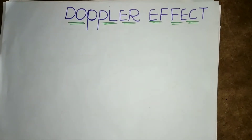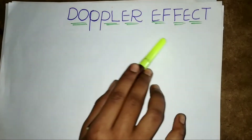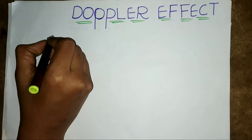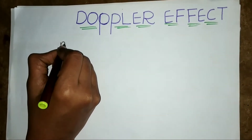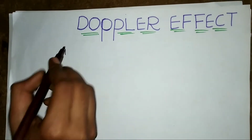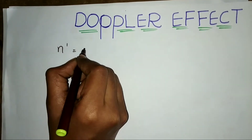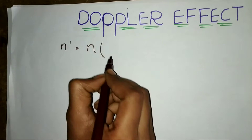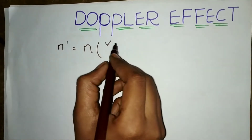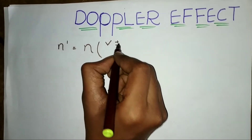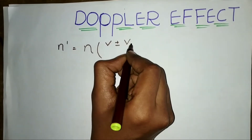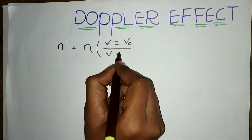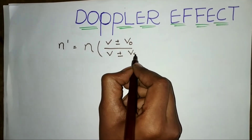Hi students, I am going to reveal the trick for Doppler effect. For this you have to remember one formula: apparent frequency is equal to real frequency into speed of sound plus or minus speed of observer, divided by speed of sound plus or minus speed of source.